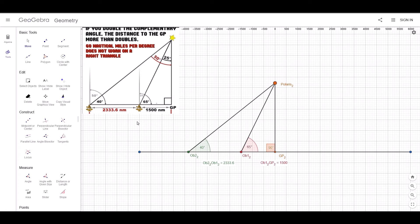Hello, this is my response to one of Brian's Logix videos called Complementary Angles. It's centered around this image here, and what this image says is for a flat earth, if you double the complementary angle, the distance to the GP more than doubles. That's obviously in conflict with the 60 nautical miles per degree that everybody agrees with. So let's go ahead and find out why this is a problem for flat earth and it's not a problem for globe earth.